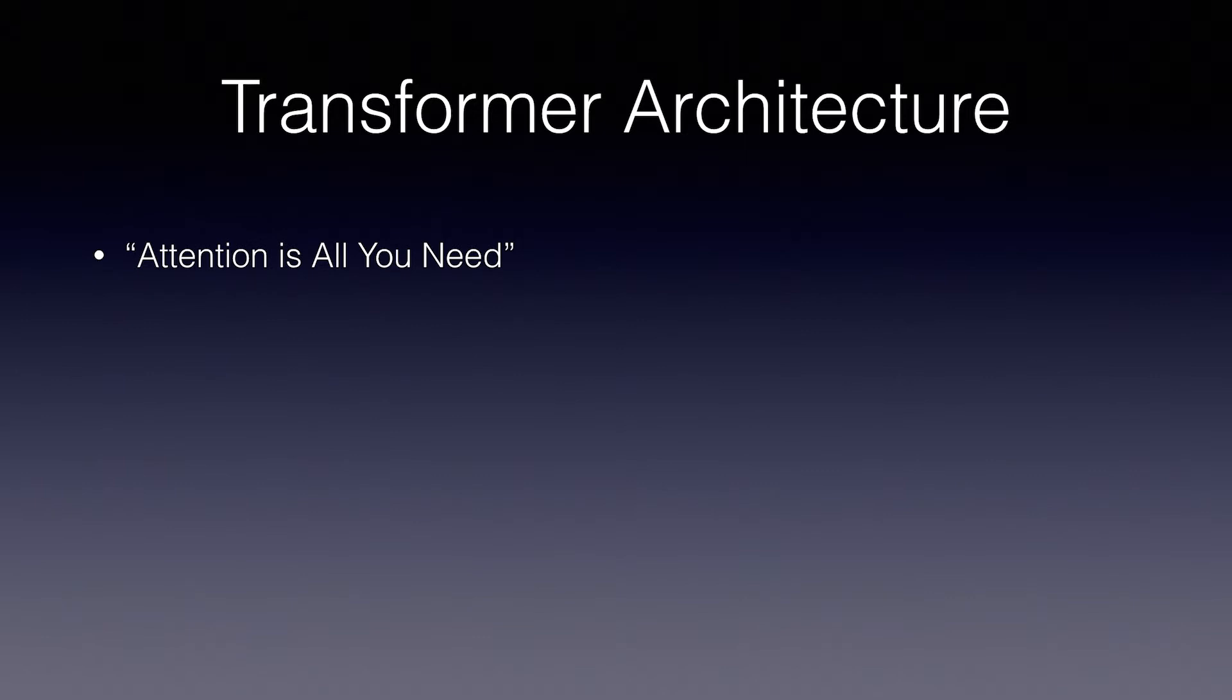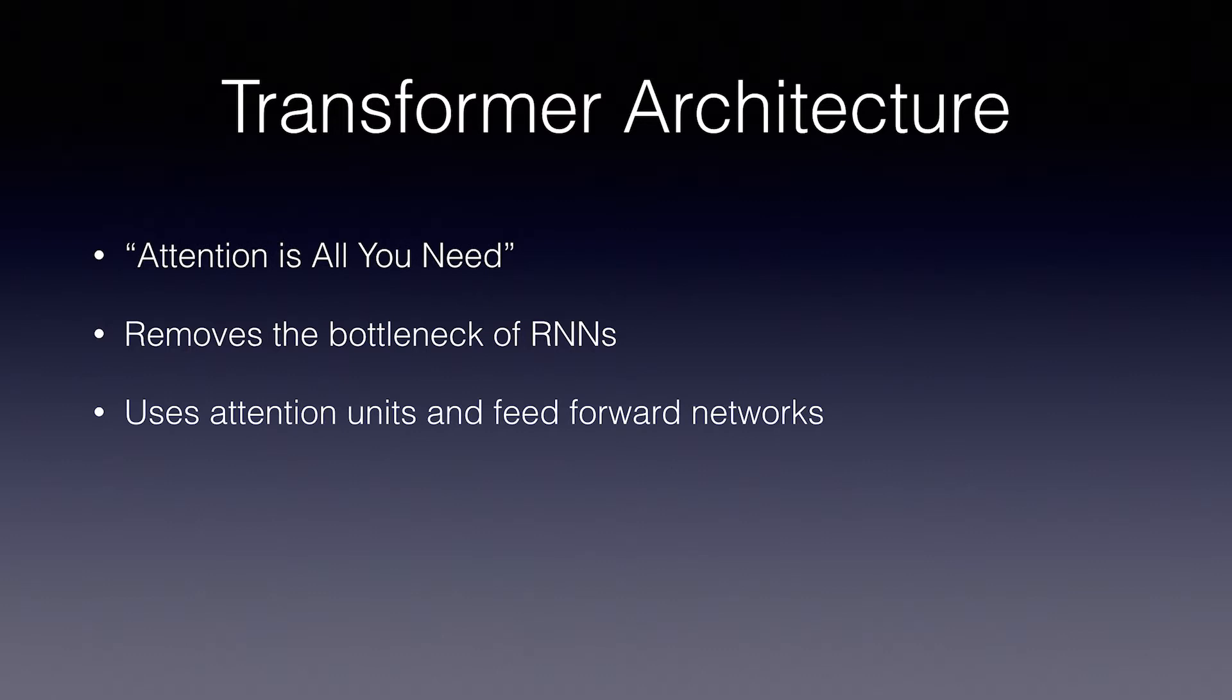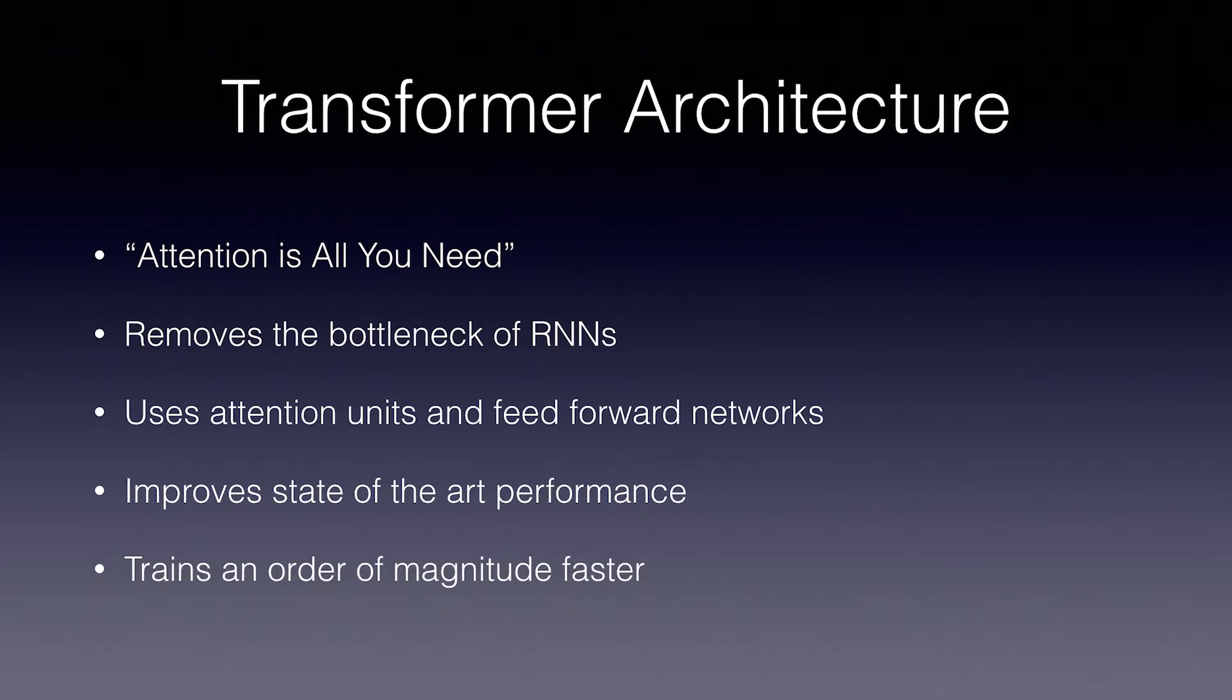One of the biggest weaknesses of traditional recurrent networks is that sequences must be fed in step by step, each hidden state dependent on the last. This prevents parallel computing and makes training much slower. In fact, RNN training time increases in direct proportion to the sequence length. The Transformer architecture is an innovation which eliminates RNNs completely, replacing them with simple feedforward networks and attention units, which not only improve on state-of-the-art sequence-to-sequence results, but train in order of magnitude faster. This is because sequences can now be calculated in parallel rather than step-by-step.